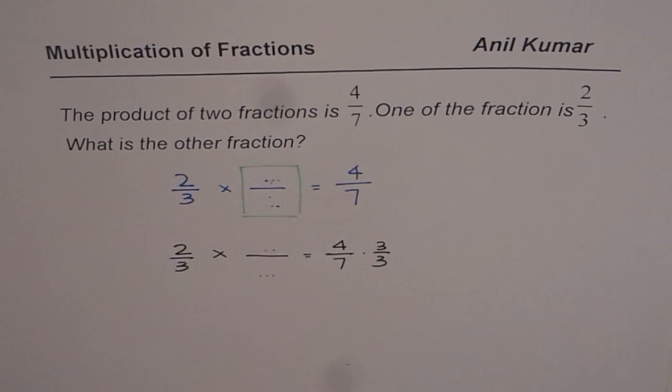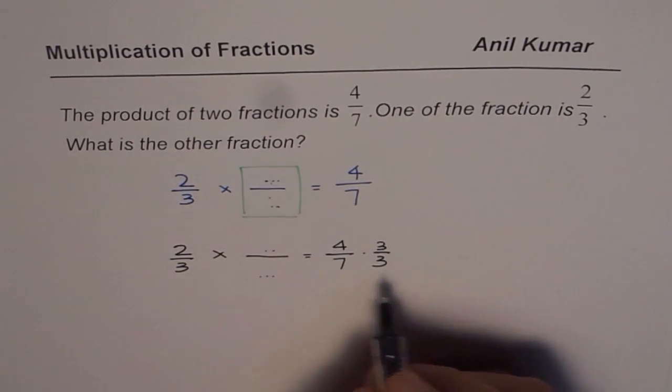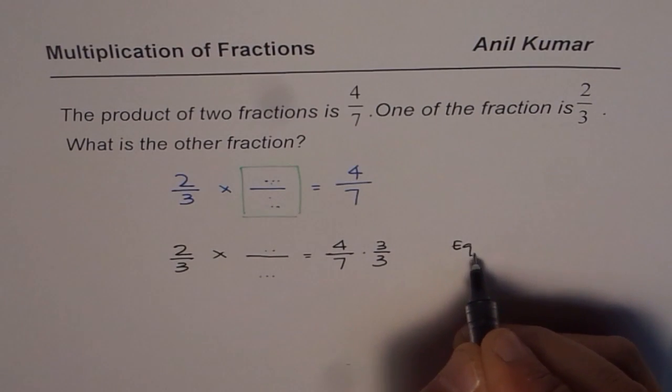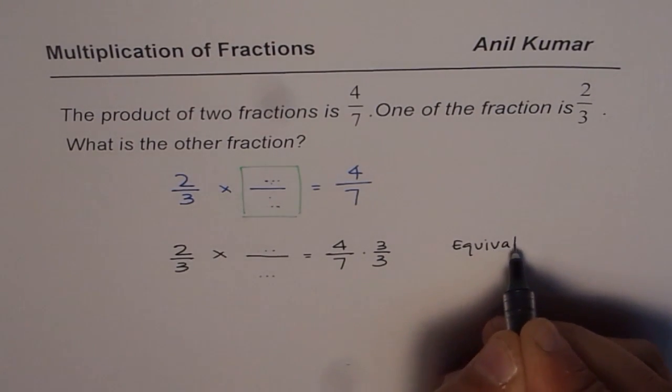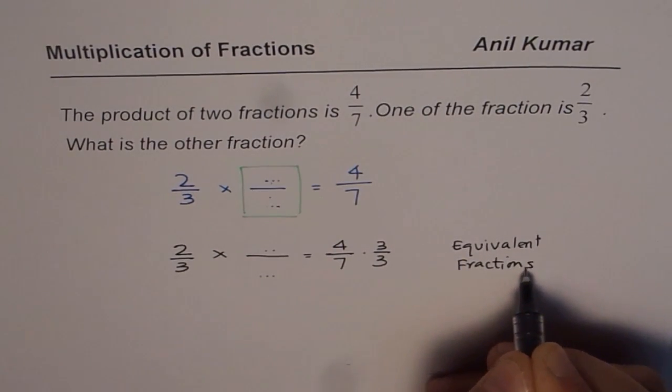3 over 3 is 1. So it does not really change the equation. So it is still the same thing, 4 over 7. So we are talking about equivalent fractions.